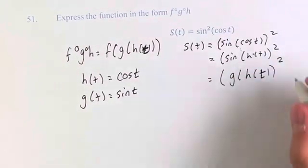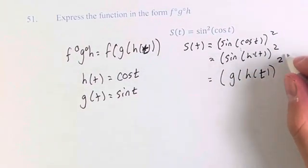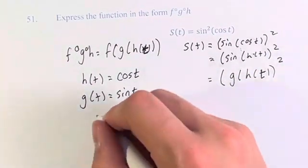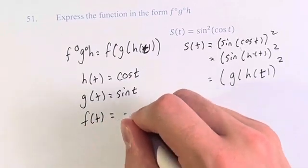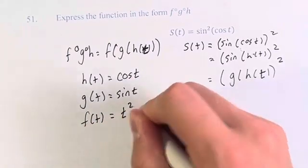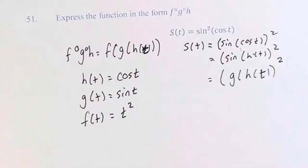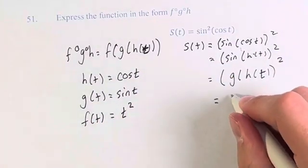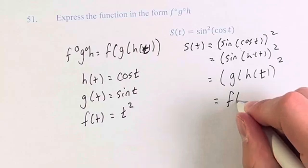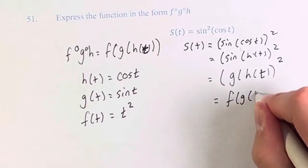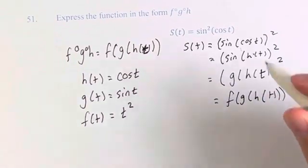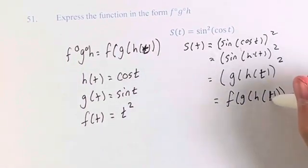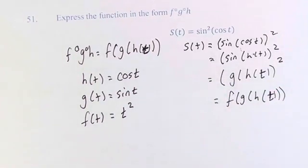We only have one step left. If we're squaring it, that means f of t is equal to t squared. Therefore, this is equal to f of g of h of t — this triple composition — as we were looking for.